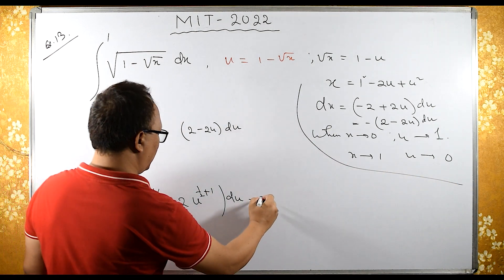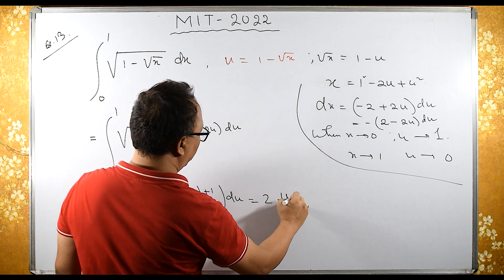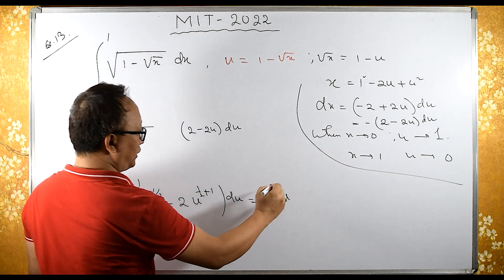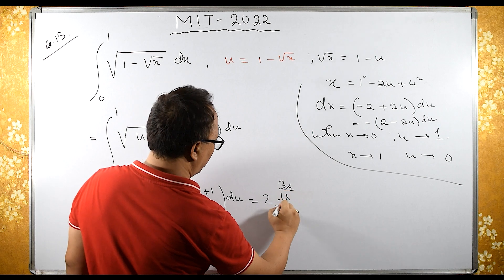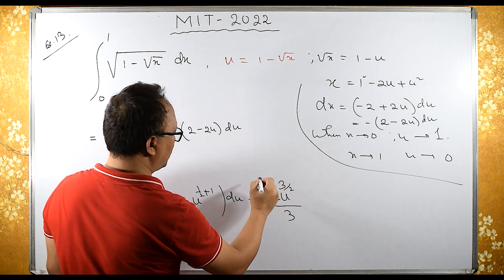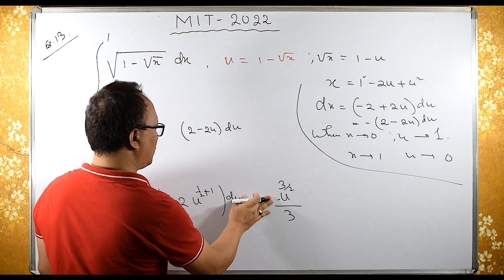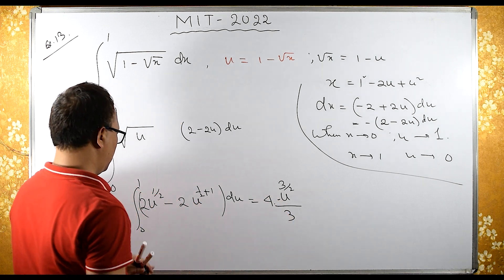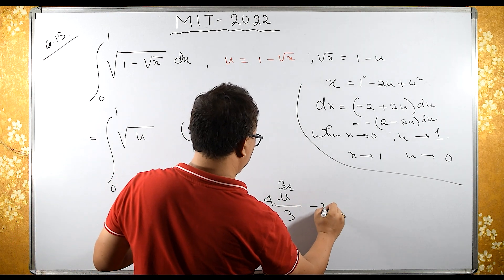Integration gives 2 times u^(3/2) divided by (3/2), so 2 times 2/3, which is 4/3. I can take 4 common from both terms.